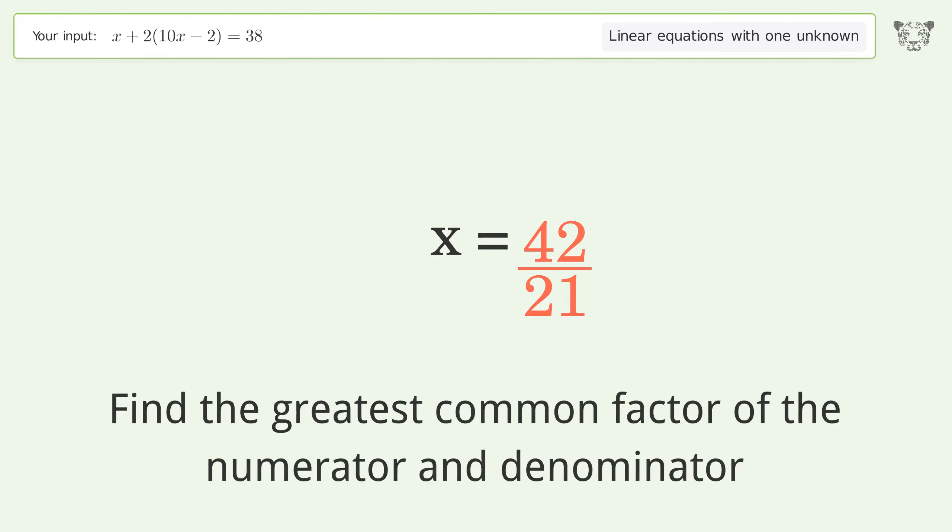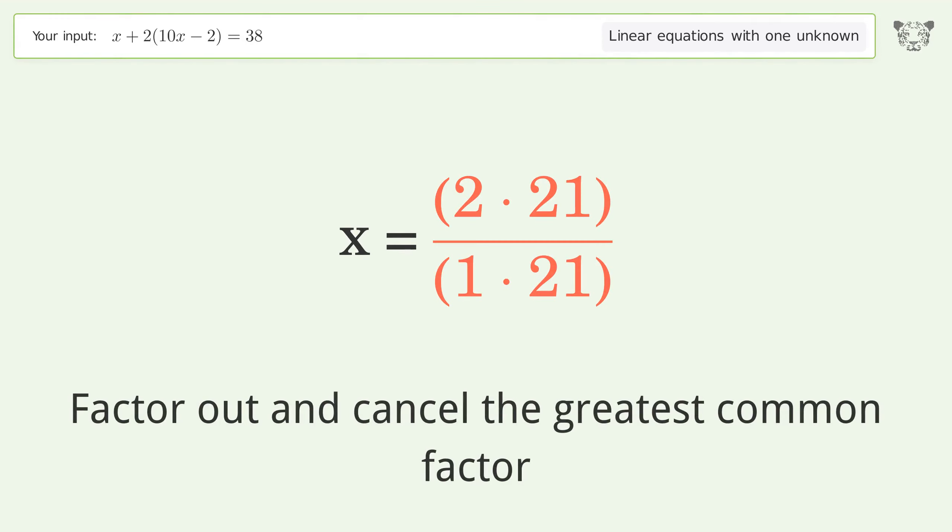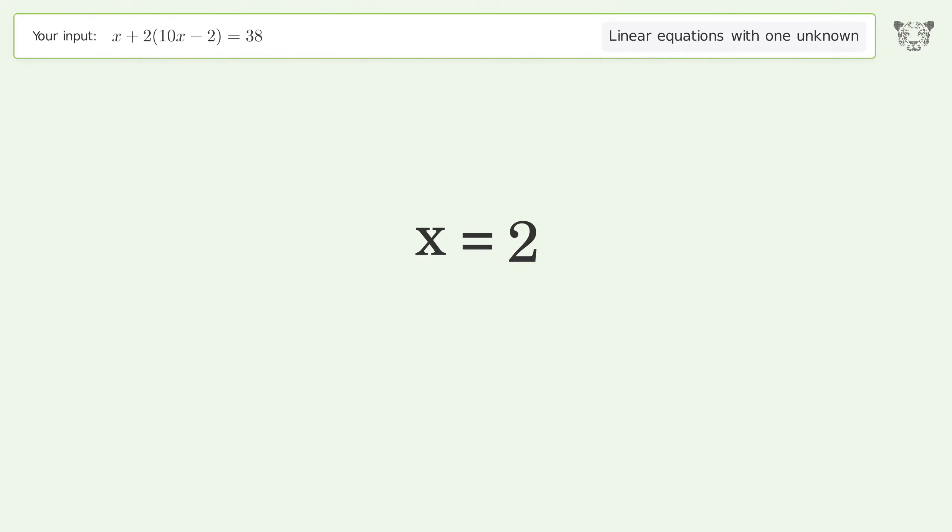Find the greatest common factor of the numerator and denominator. Factor out and cancel the greatest common factor. And so the final result is x equals 2.